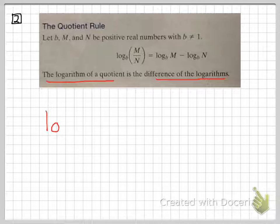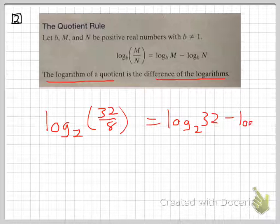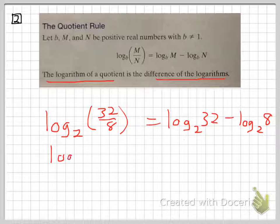I'm going to use the same numbers here and do log base 2 of 32 eighths, which is really just the log base 2 of 4. And that should be the log base 2 of 32 minus the log base 2 of 8. So since this is log base 2 of 4, we know that the answer to that is 2. And individually these are going to be 5 and 3. And when I subtract 5 and 3, I do in fact get 2. So just one example where that makes sense.